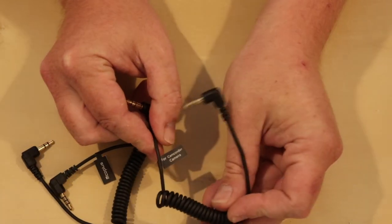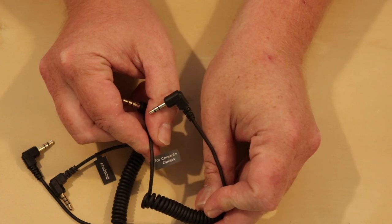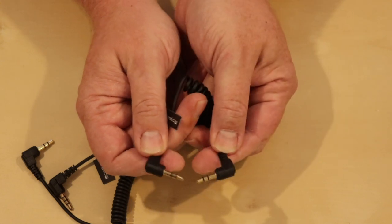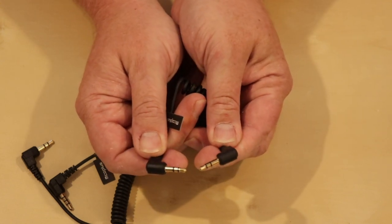This first one says for camcorder or camera. So on each end this is a TRS or tip ring sleeve cable.